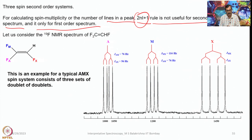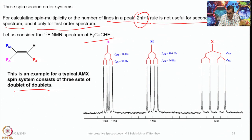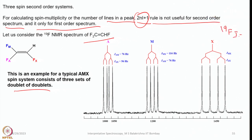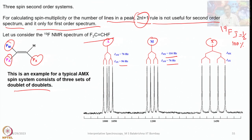Let us consider the ¹⁹F NMR spectrum of trifluoroethylene, which is an example of an AMX spin system consisting of three sets of doublets of doublets. ¹⁹F is 100% abundant with spin I = ½, so it behaves very similarly to ¹H NMR or ³¹P NMR. FA shows a doublet of doublets, FM shows a doublet of doublets, and FX shows a doublet of doublets. The MX coupling, AM coupling at 56 Hz, and AX coupling at 76 Hz are given, with the trans coupling being the largest. The spectrum appears like a first order spectrum.